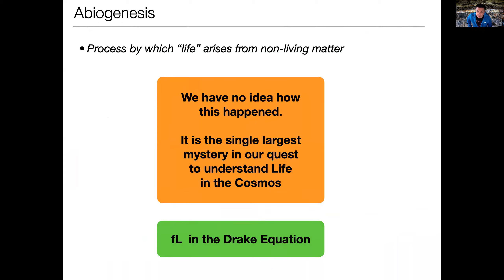What that really means is when we go back in the fossil record, we have no idea when the very first moment life occurred — we should see no life before that point and only see life after it. This is the single largest mystery in our quest to understand life in the cosmos. It appears in the Drake equation as FL — the fraction of planets that develop life — which is really asking how likely it is that abiogenesis happens. If you start with a lifeless environment, how often does life spontaneously develop from non-living matter?